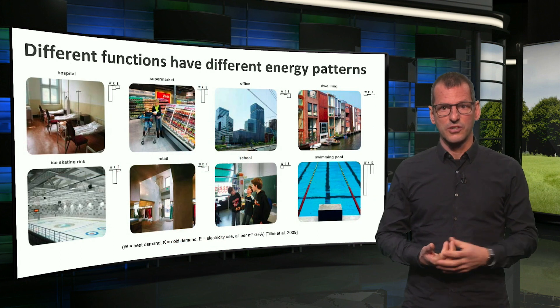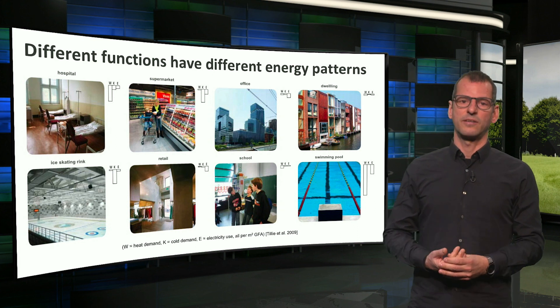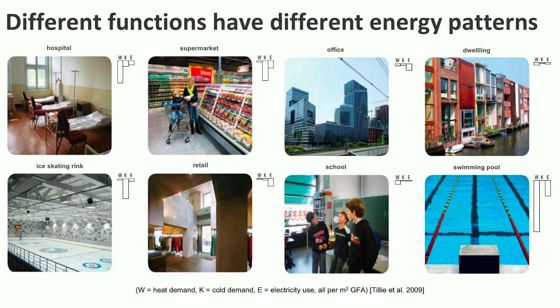This starts with the notion that the city accommodates many different urban functions, which all have different energy patterns. Here we see eight different functions and their energy patterns for heat (W), cold (K), and electricity (E). As you may see, the energy demands per square meter differ a lot. Some buildings use a lot of heat, others more cold. What we teach you in this course is basically how to make a single building energy neutral, but in an urban context it might be smarter to attune the different functions, make use of excesses and shortages, and to exchange heat between buildings.